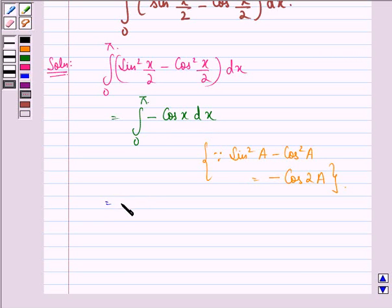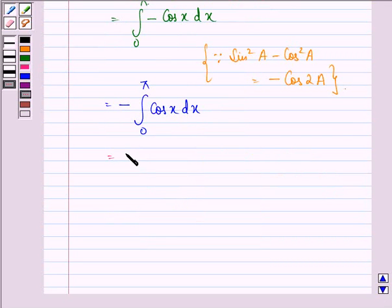Now, this is equal to minus the integral of cos x dx where the limit goes from 0 to π. Now, the integral of cos x is sin x.